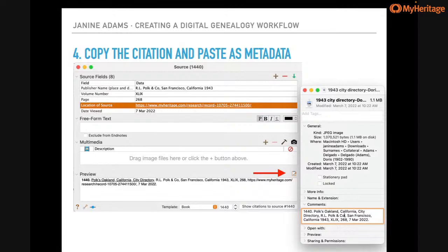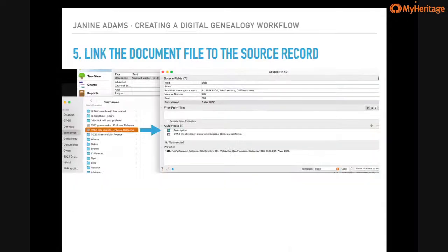Step five is a really important step: I drag the file from Finder into the multimedia section of the source record in Reunion. This means if I'm looking at the source record, I can just click on it and see the document. Sometimes I think 'where did I get that information?' and I'll check my work by clicking the document. And because it's linked in Reunion, it's also available on my phone via the Reunion Touch app, so I can access it even when away from my computer.